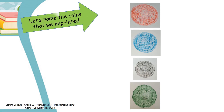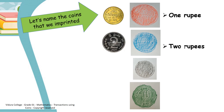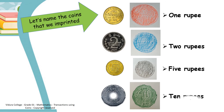Let's name the coins that we imprinted: 1 rupee, 2 rupees, 5 rupees and 10 rupees.